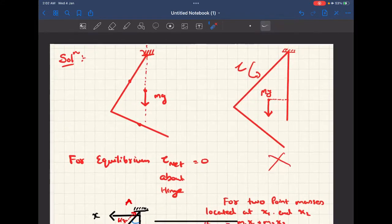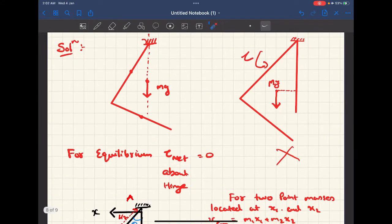So the concept that we'll be reading in this question is a simple fact that the center of gravity of the system, which is basically this L-shaped rod, must pass through this vertical line which is passing through the hinge carrying the system.